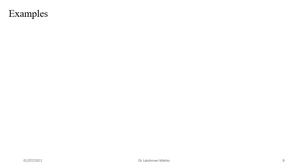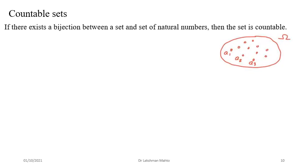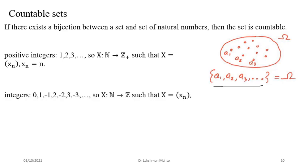I've discussed countable sets already. If you have a set with a lot of points and can put them in a single sequence, the set is countable. The set of natural numbers is countable — the nth term is simply n. Integers are also a countable set. You can define a bijection from ℕ to ℤ: even natural numbers map to positive integers, and odd natural numbers map to negative integers.